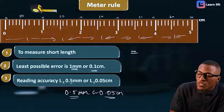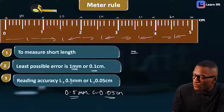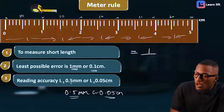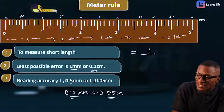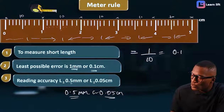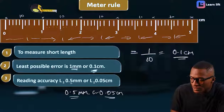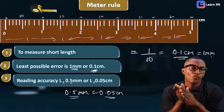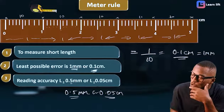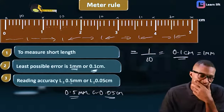So between each centimeter mark, from 0 to 1 the difference is 1 centimeter, and there are 10 small divisions. That means each small division equals 1 divided by 10, which gives 0.1 centimeter. That is why we say the least possible error of a meter rule is 0.1 centimeter. And if you convert this to millimeter, it is the same as 1 millimeter. I have now proven how we arrive at the least possible error of a meter rule: 0.1 centimeter or 1 millimeter.